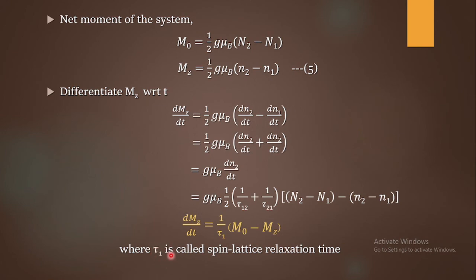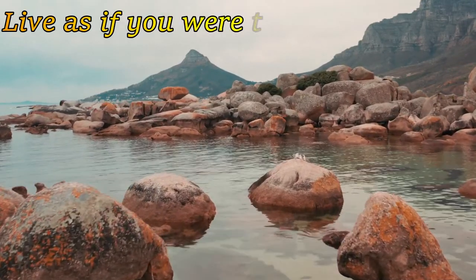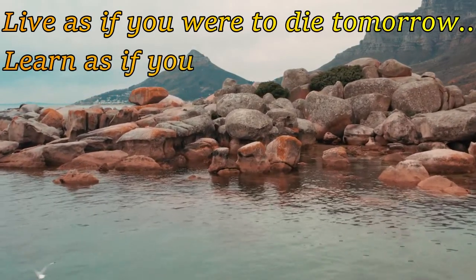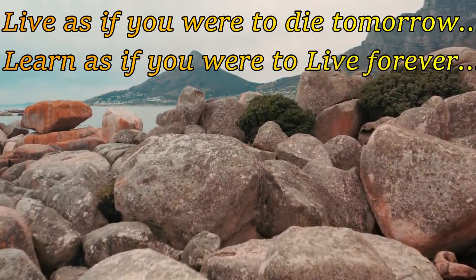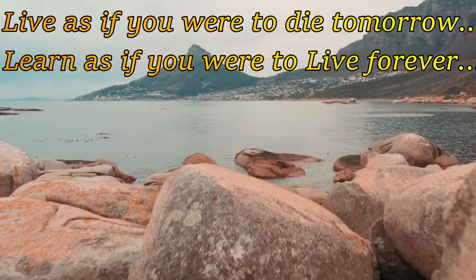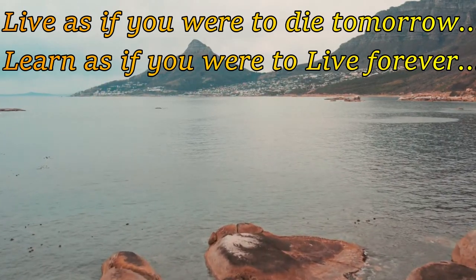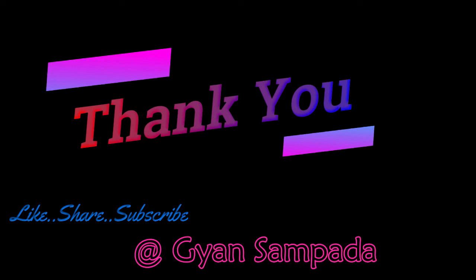For more information, we need to move to the concept of susceptibility, which is very important in magnetism. The relation between susceptibility and spin-lattice relaxation will be taken up in our next class. Today we dealt with the introduction and derivation of the phenomenological equation involving τ1, the spin-lattice relaxation time. In the next class we will represent susceptibility versus spin-lattice relaxation time as a function of frequency graphically. Study well, stay tuned, and thank you for watching.